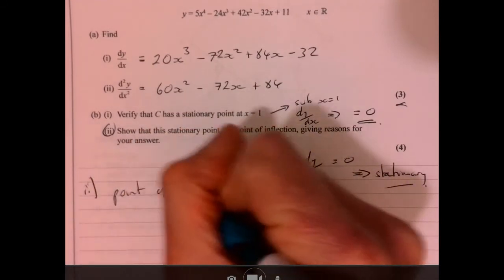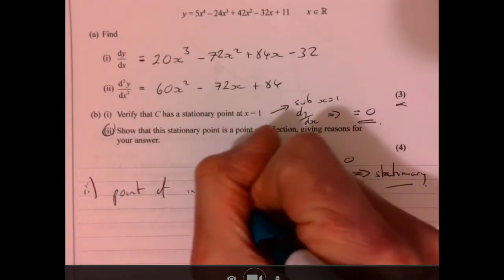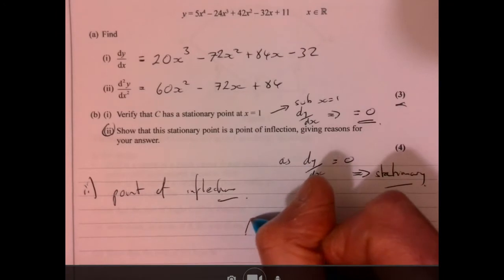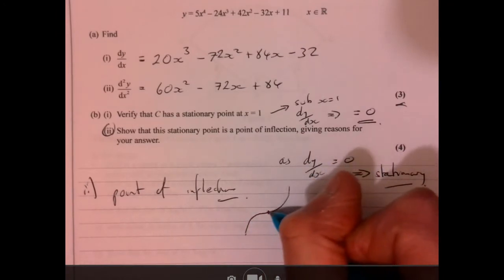Okay, so first of all, let's just consider what it is. Because if you know what it is, actually the process is relatively simple. A point of inflection means, basically, this sort of thing is happening with your graph. Okay, like a curve.